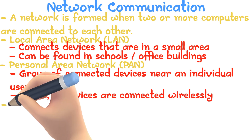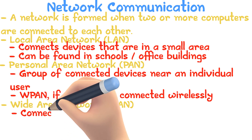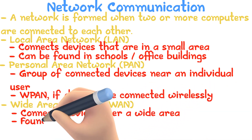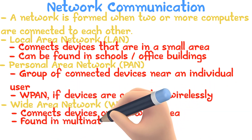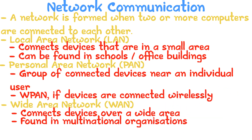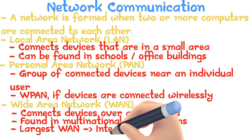A Wide Area Network connects devices over a large area. A WAN can be found in multinational organizations, connecting their networks, and some even launching their own satellites. The largest WAN is the internet.